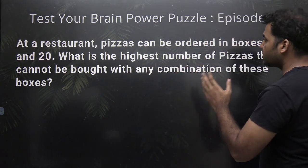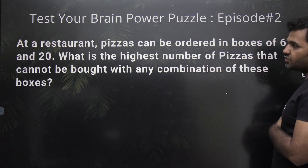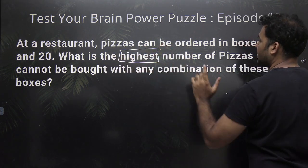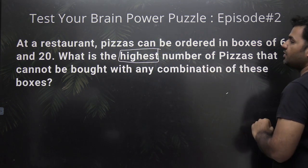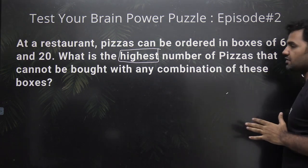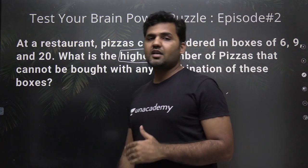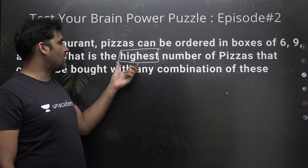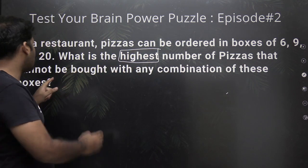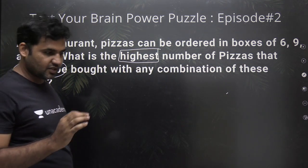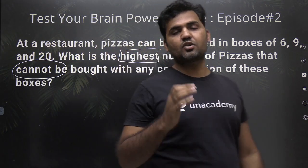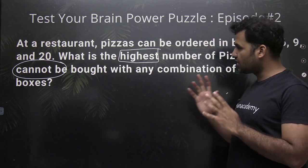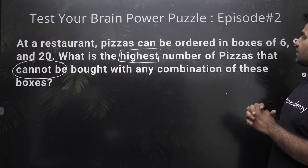The puzzle says that at a restaurant, pizzas can be ordered in boxes of 6, 9, and 20. What is the highest number — the word mentioned here is 'highest' — number of pizzas that cannot be bought with any combination of these boxes? So with 6, 9, and 20 boxes, we are supposed to find out the highest number of pizzas that cannot be bought. Just pause the video and try to solve it by yourself.